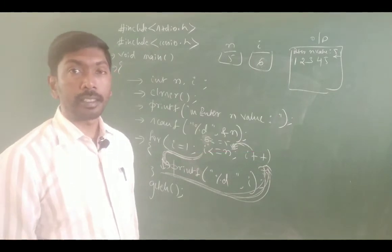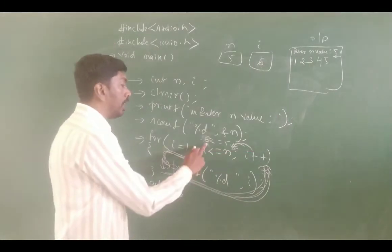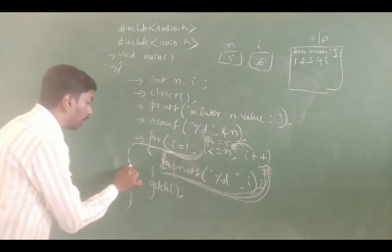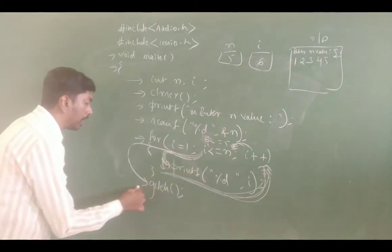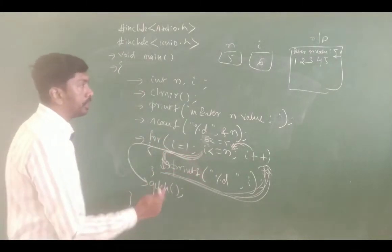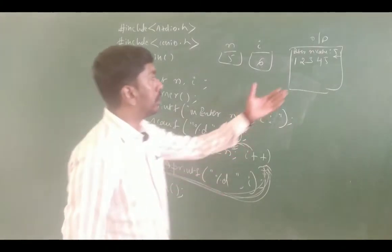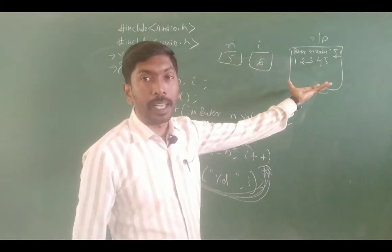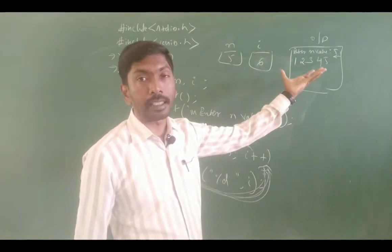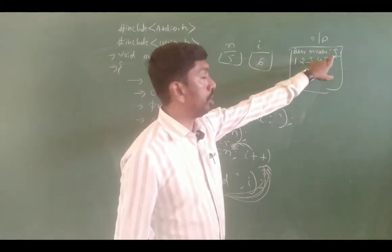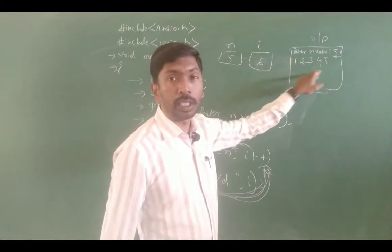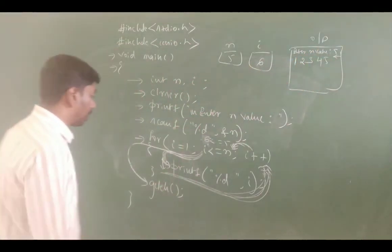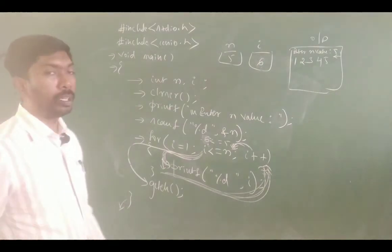6 is greater than 5, so condition is false. Control comes out of the block. It displays the output on screen. The output shows: enter n value 5, then 1, 2, 3, 4, 5 are displayed. Then it comes out of the main method.